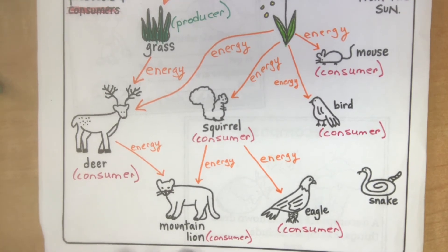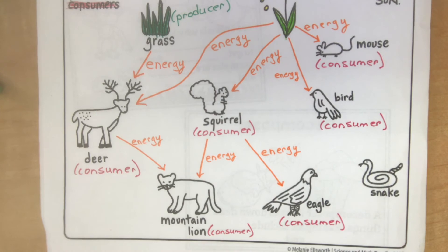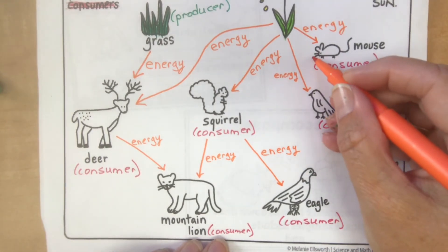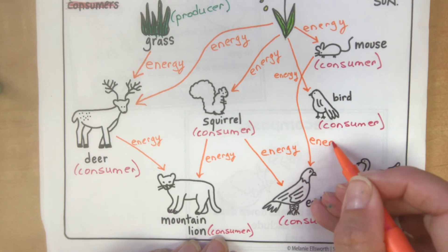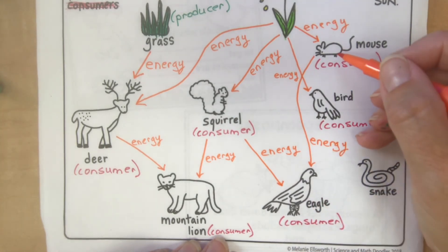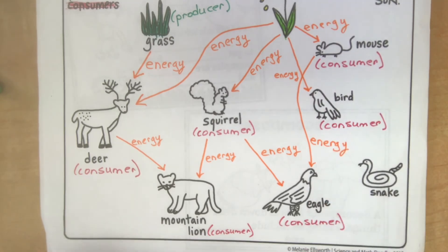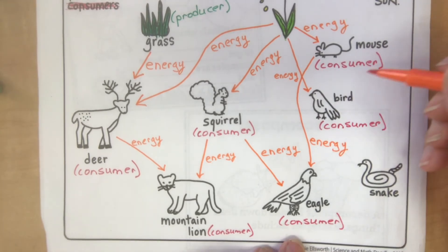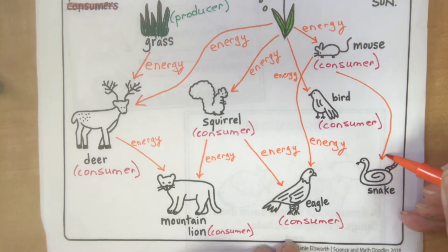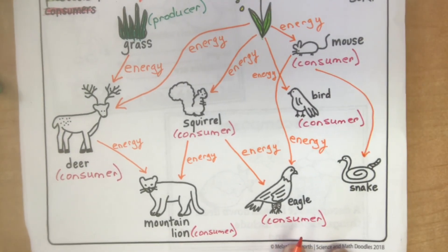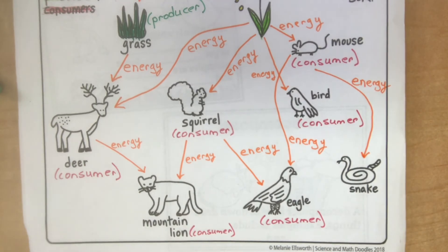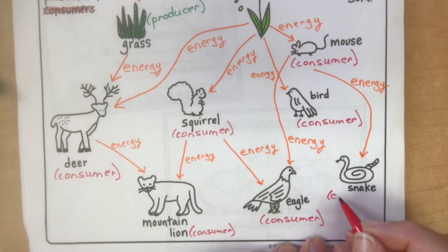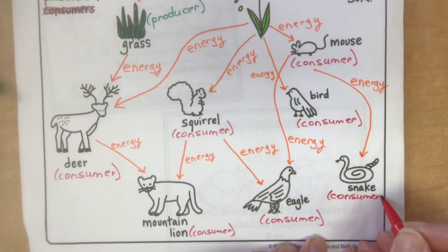By now you definitely know how to spell consumer. Another thing that an eagle eats — and this is why it is a food web, it's starting to look like a web — an eagle eats a mouse, so energy goes from the mouse to the eagle. And the mouse gets eaten by the snake, so once again, energy flows from the mouse to the snake, making the snake a consumer since it consumes the mouse.